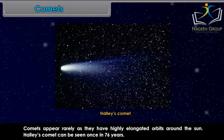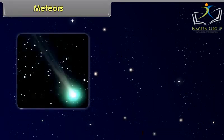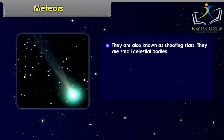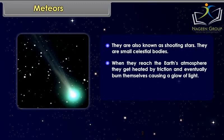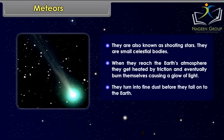Meteors are also known as shooting stars. They are small celestial bodies. When they reach the Earth's atmosphere, they get heated by friction and eventually burn themselves, causing a glow of light. They turn into fine dust before they fall onto the Earth.